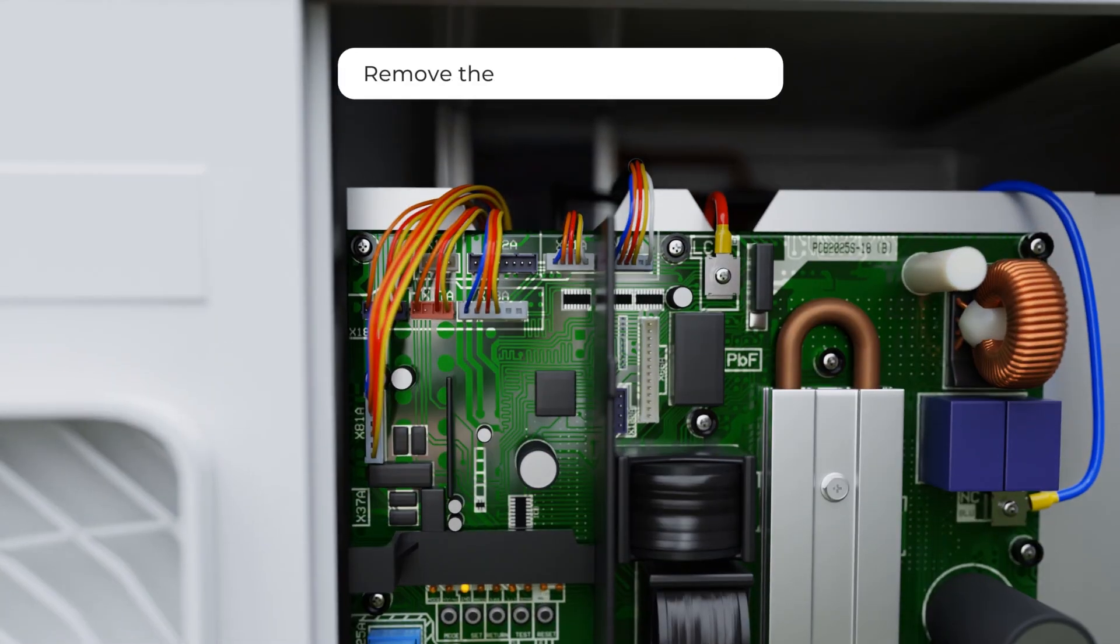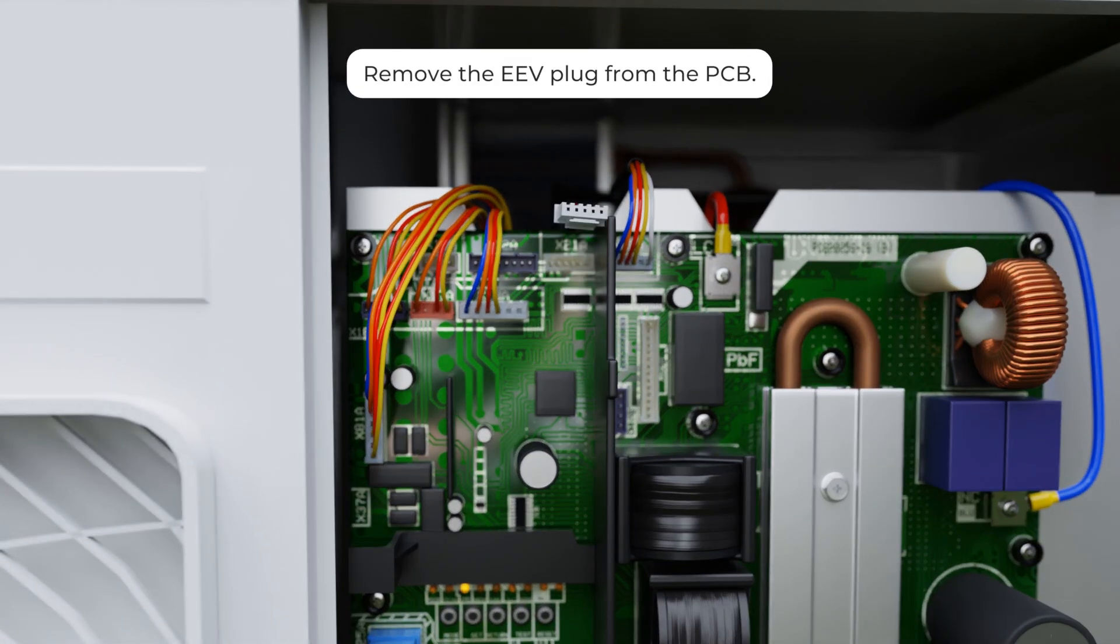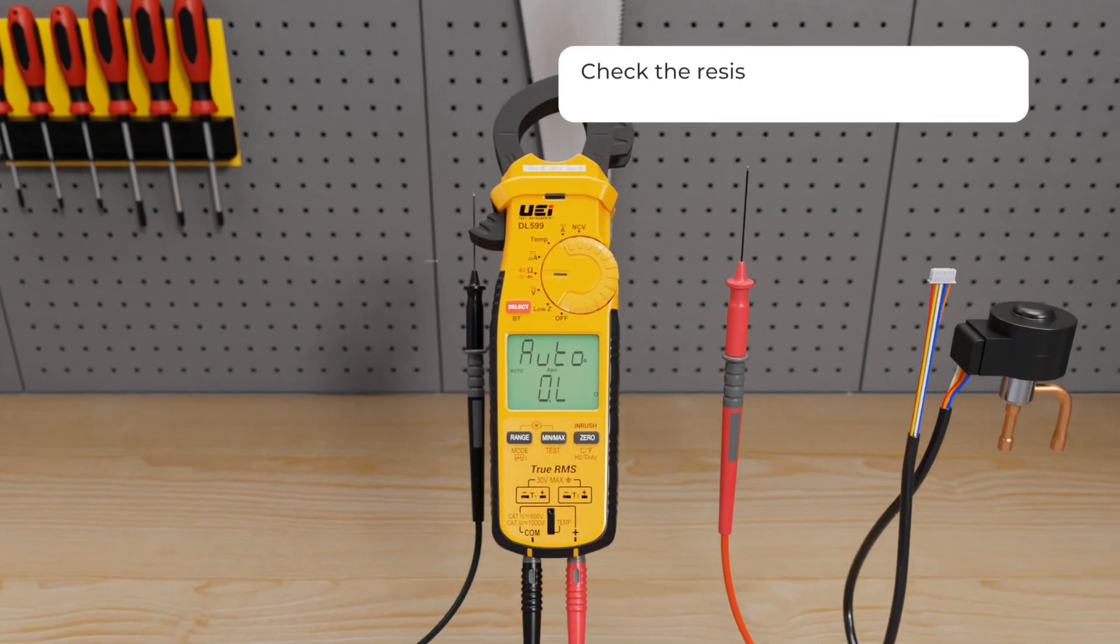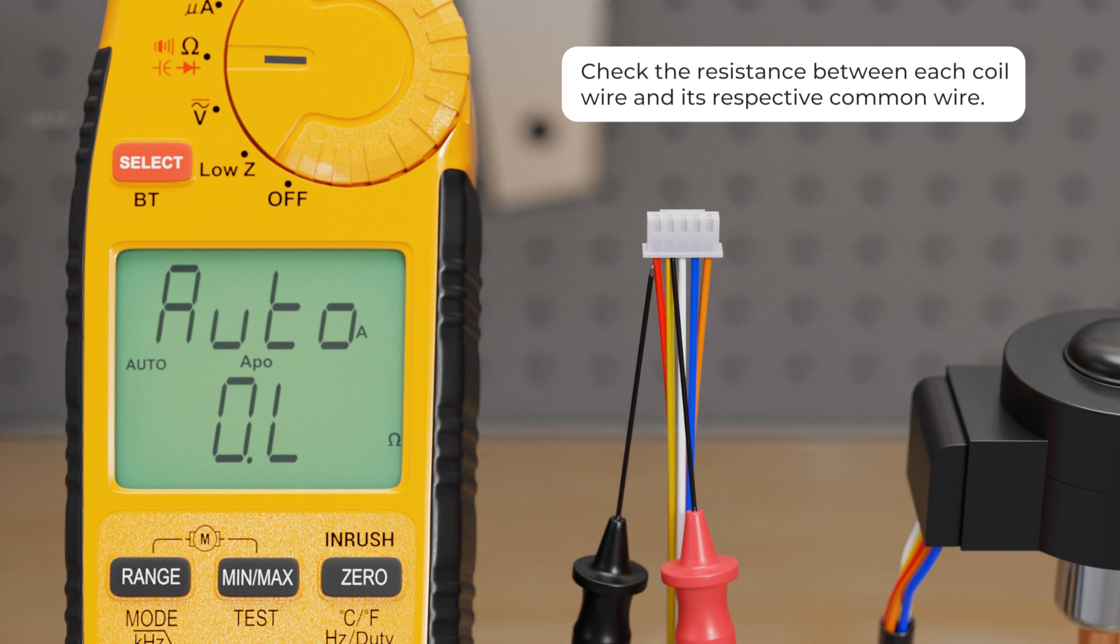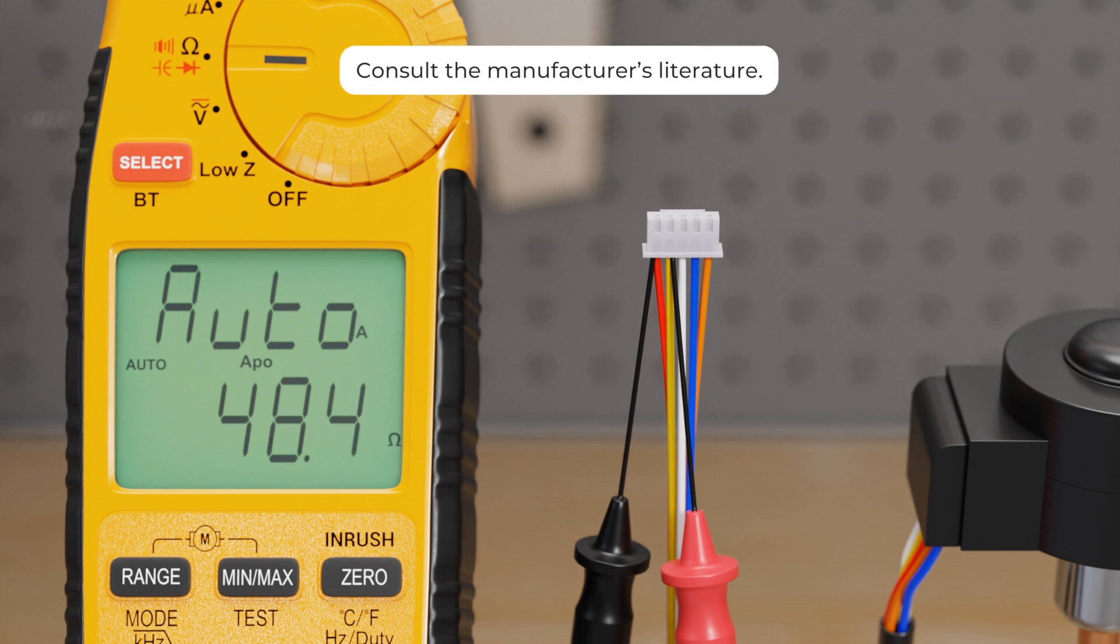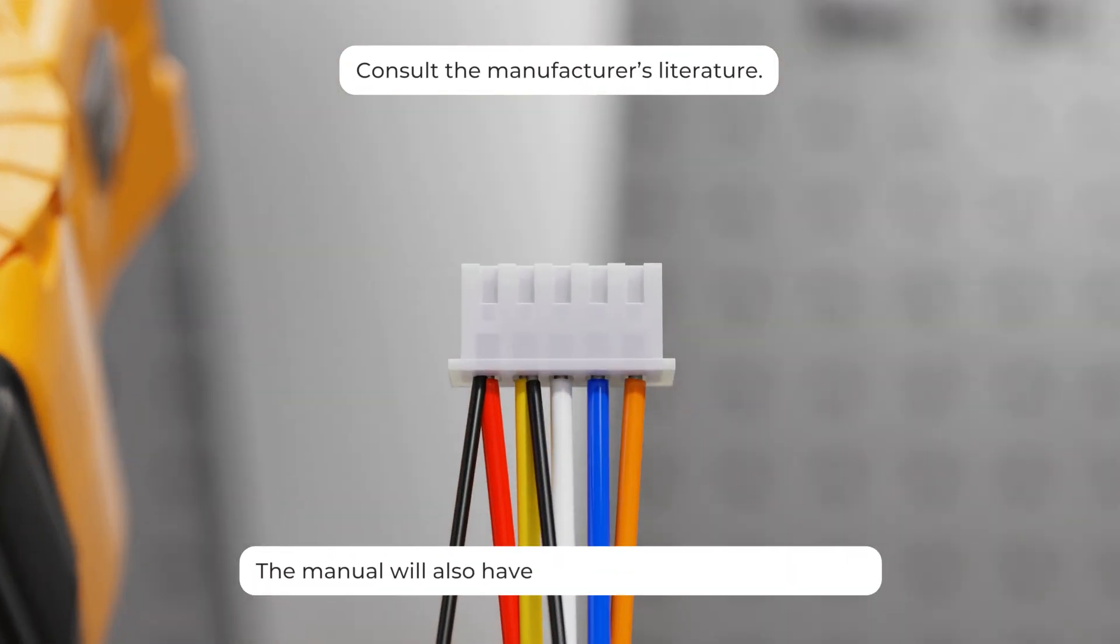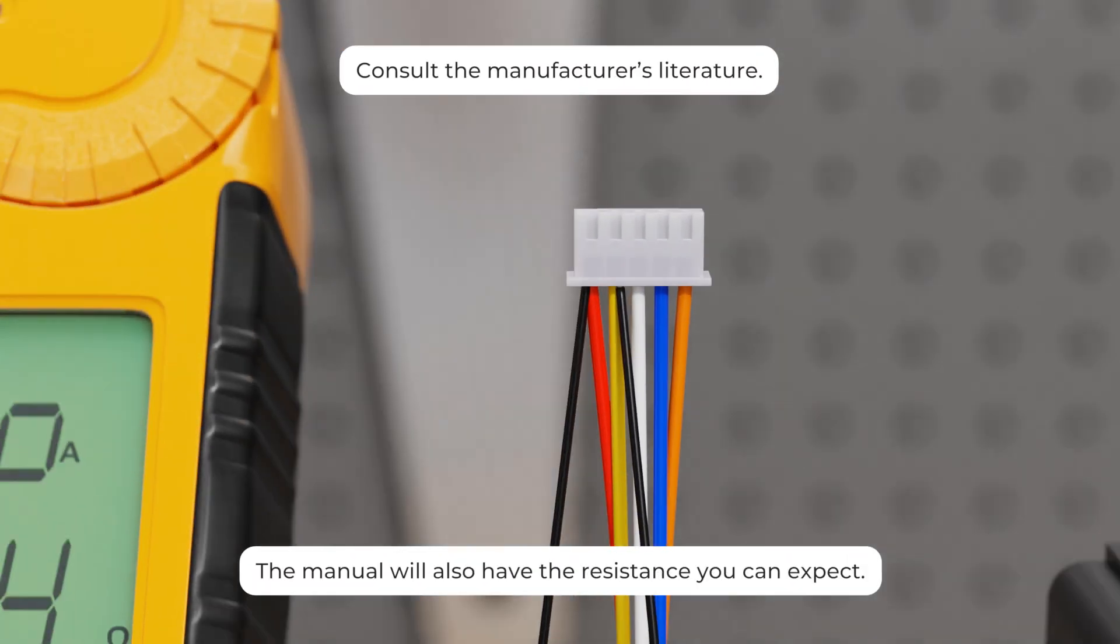Then remove the EEV plug from the PCB. Check the resistance between each coil wire and its respective common wire. If you don't know which wires are which, consult the manufacturer's literature. The manual will also have the resistance you can expect.